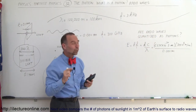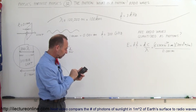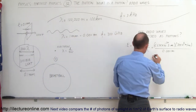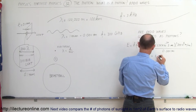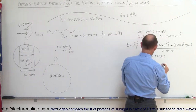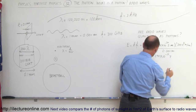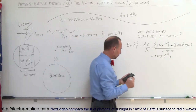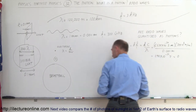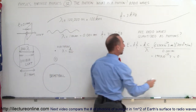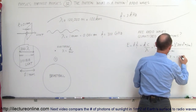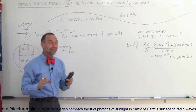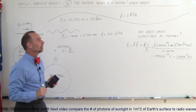So the energy of a 1 mm radio photon would be 6.626 × 10⁻³⁴ times 3 × 10⁸ divided by 0.001, giving us 1.98 × 10⁻²² joules. Dividing by 1.6 × 10⁻¹⁹ to convert to electron volts, that equals 1.24 × 10⁻³ electron volts — a little more than one-thousandth of an electron volt. That's not a lot of energy contained within one photon of that kind of radiation.